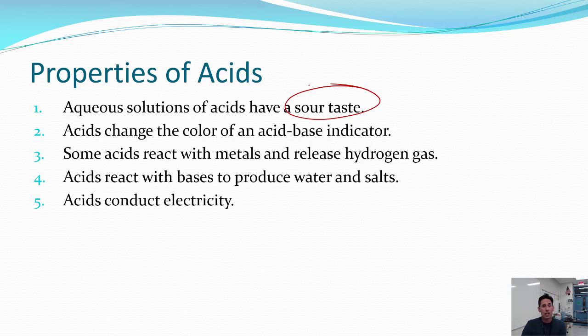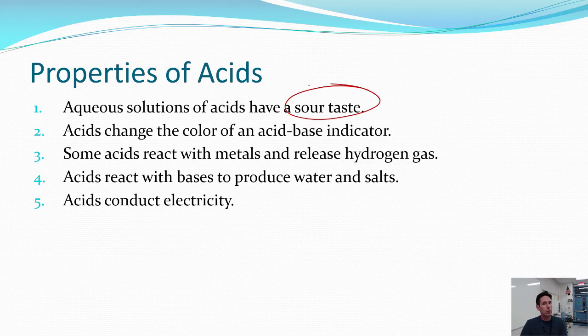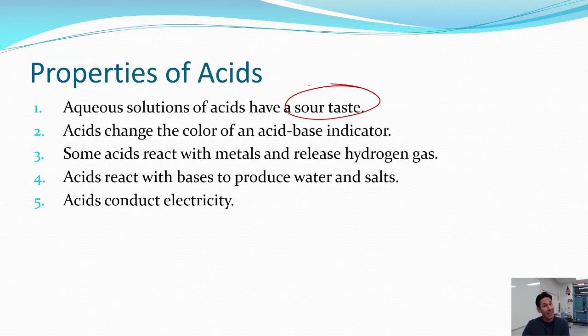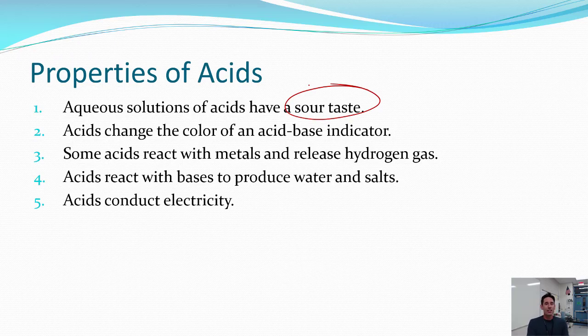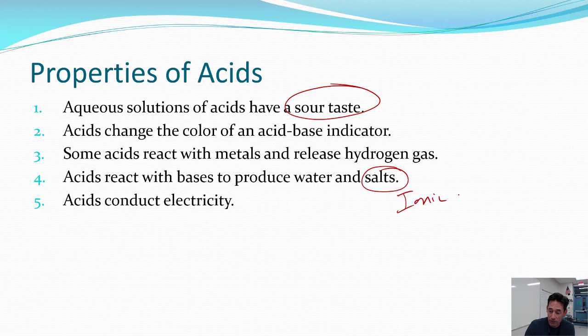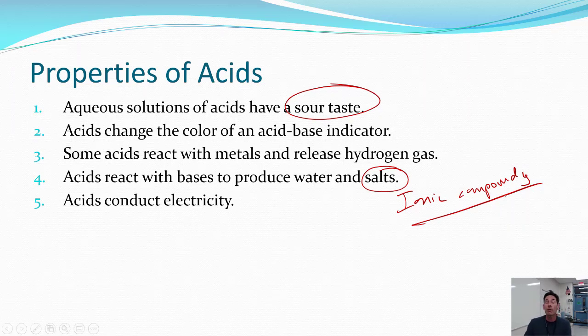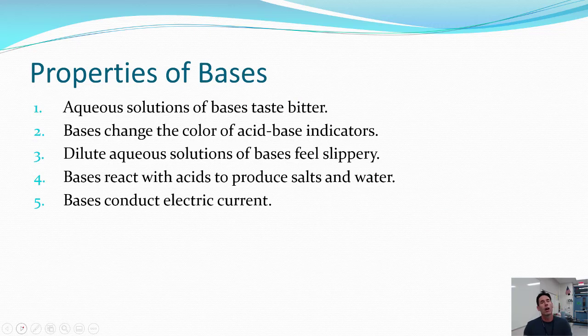And acids will change the color of an acid-base indicator, as well as some acids react with metals to release hydrogen. This is why we have switched most of our plumbing, meaning our drain lines in new homes, into things that are more non-reactive to acids, such as ABS plastic. And then acids will react with bases to produce water and salt. Salt is a fancy term for ionic compounds. And acids are fantastic conductors of electricity. This is why we find it in car batteries.